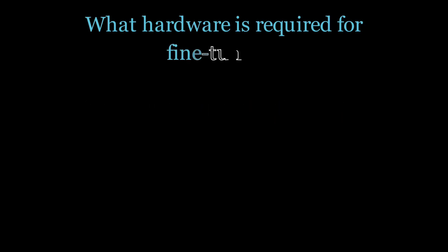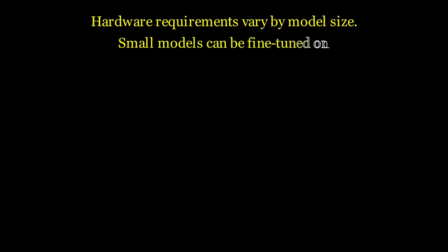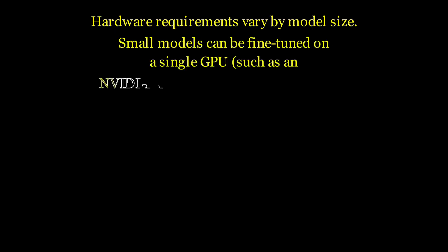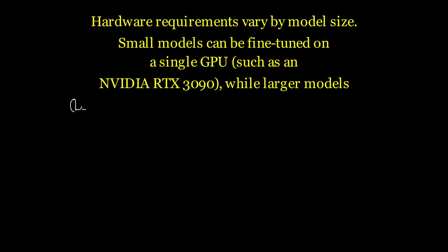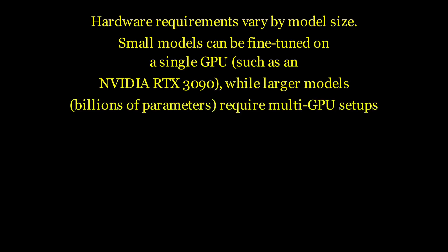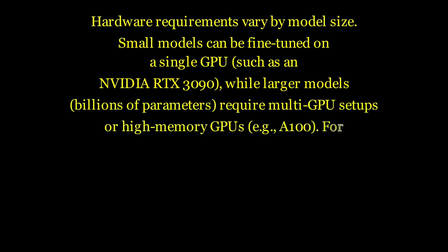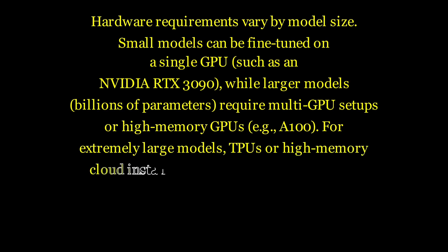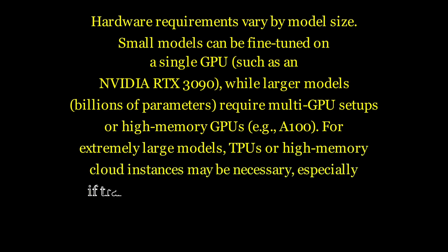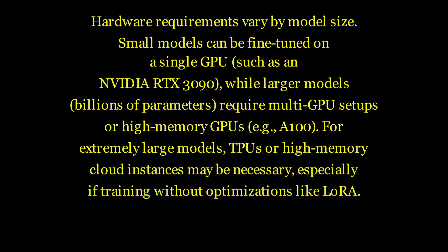What hardware is required for fine-tuning? Hardware requirements vary by model size. Small models can be fine-tuned on a single GPU such as an NVIDIA RTX 3090, while larger models with billions of parameters require multi-GPU setups or high-memory GPUs like the A100. For extremely large models, TPUs or high-memory cloud instances may be necessary, especially if training without optimizations like LoRA.